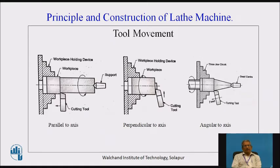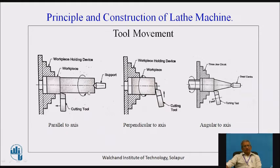These are some machining processes that can be carried out on the lathe. When the tool travel is parallel to the axis, it removes material along the circumferential surface of the workpiece, reducing the diameter. If 0.5 mm of material is removed radially by the tool, the diameter will be reduced by 1 mm. In this case, the workpiece rotates along its own axis and the tool moves parallel to the axis.